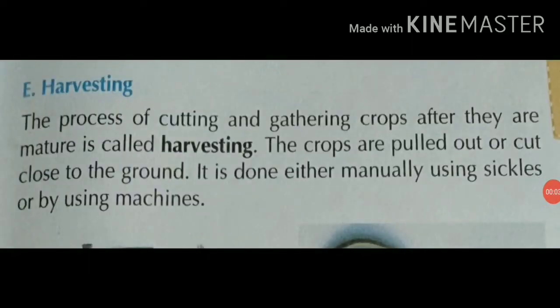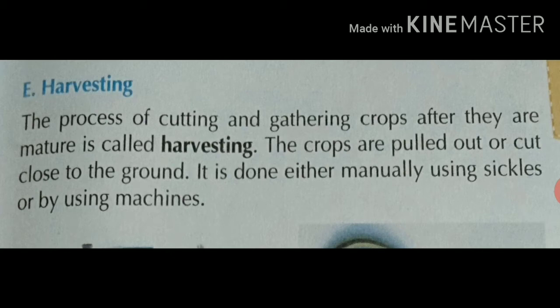Let's talk about harvesting. The process of cutting and gathering crops after they are mature is called harvesting. When the crops are pulled out and cut close to the ground, it is called harvesting. When crops are ready, they can either be pulled out from the ground or cut from the ground.